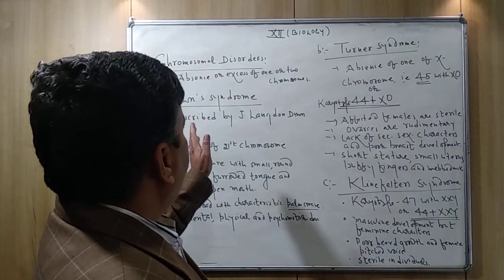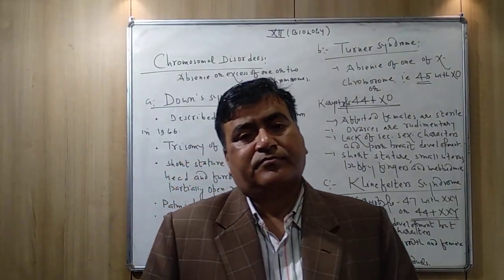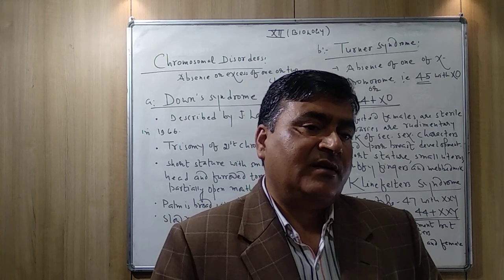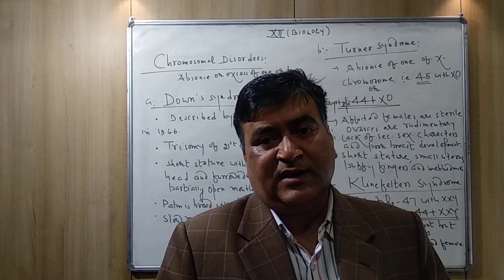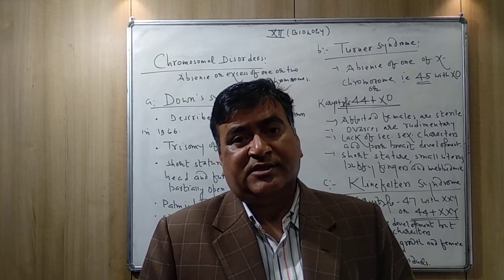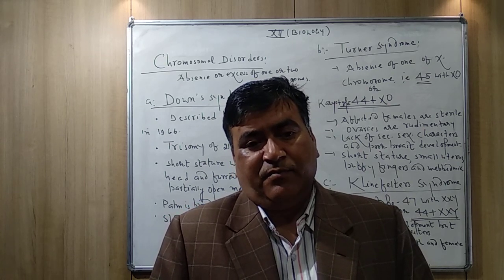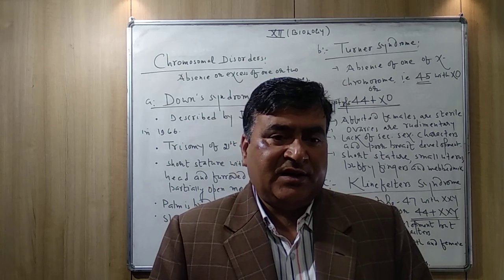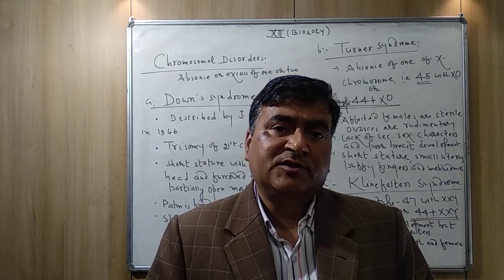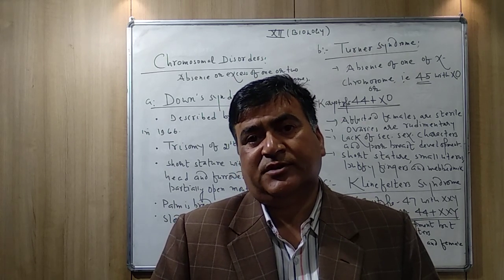In chromosomal disorders, you have to study three disorders: Down syndrome, Turner syndrome, and Klinefelter syndrome. Before discussing these three diseases in detail, let us see the definition of chromosomal disorders. Chromosomal disorders are caused by the addition or deletion of one or two chromosomes from the basic sets of chromosomes.